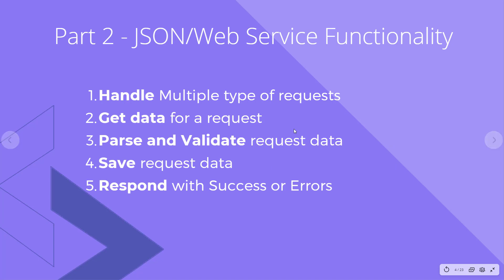Now in Part 2, we're going to look at how to handle multiple types of requests. We'll get data for requests using a grid application, parse and validate request data to make sure everything we need is there, save the request data to a database, and then respond to the requester with either success or errors.